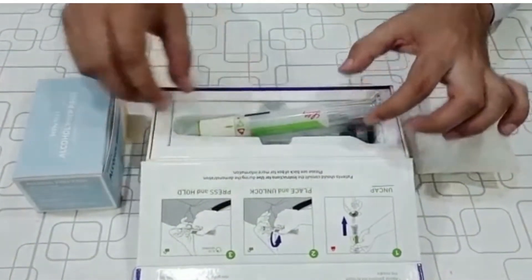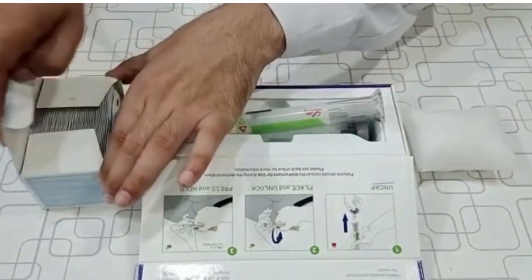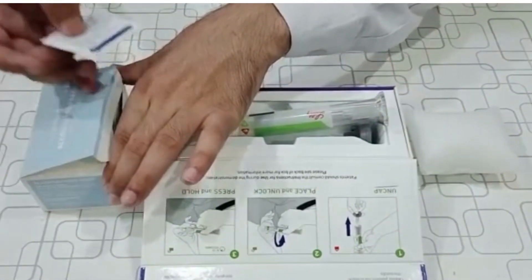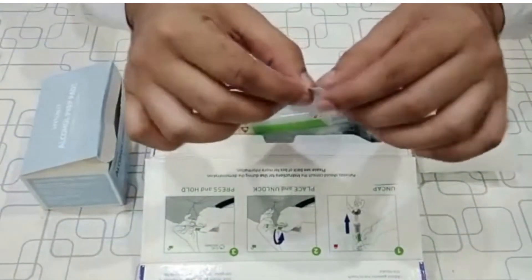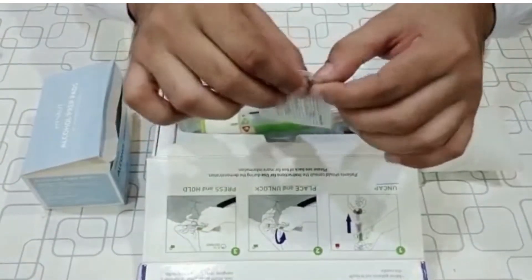It should be noted that before injecting the medication, the patient needs to clean that particular area—that is abdomen, thigh, or back part of the upper arm—with an alcohol swab.